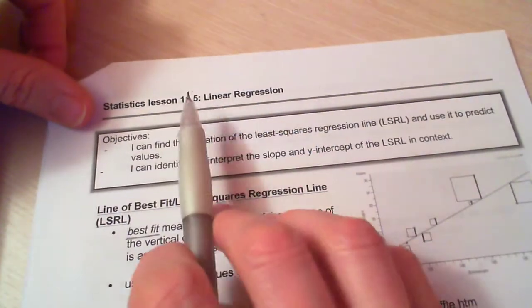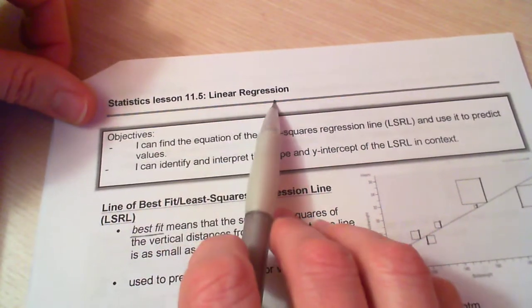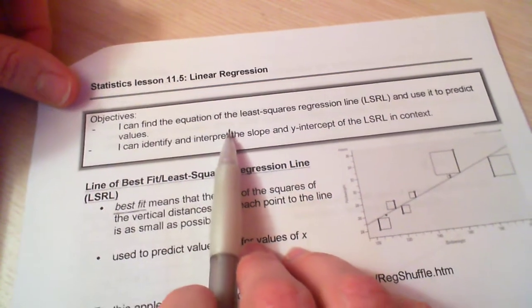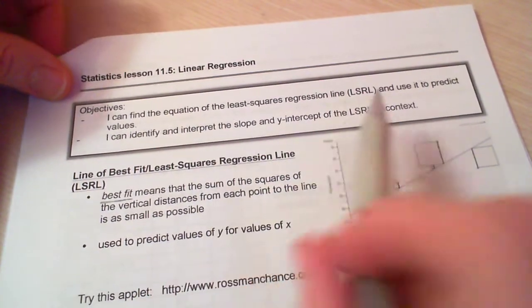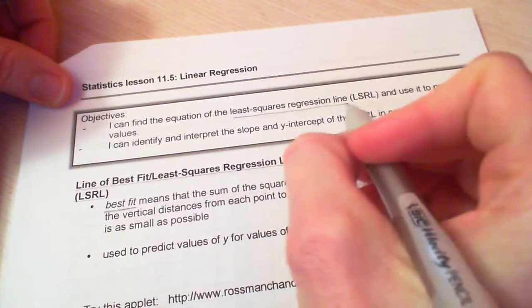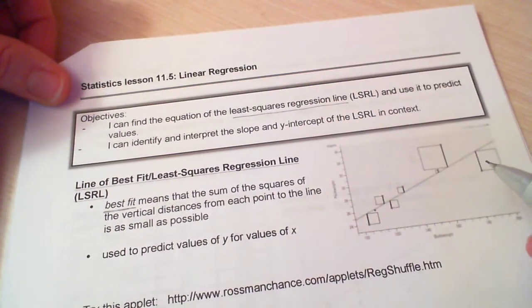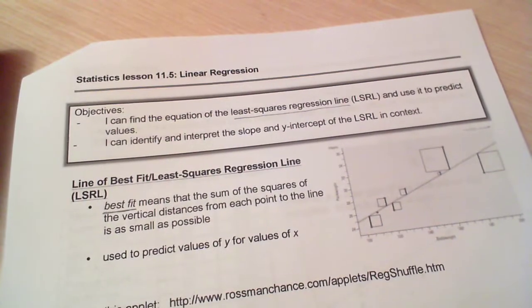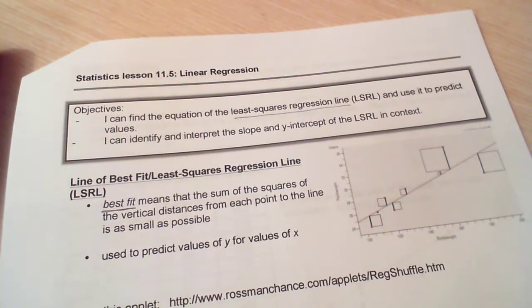This video is for section 11.5 linear regression. In this lesson we're going to find out how to put what we call a least squares regression line through our scatter plot, and we're going to get the slope and the y-intercept for that line.